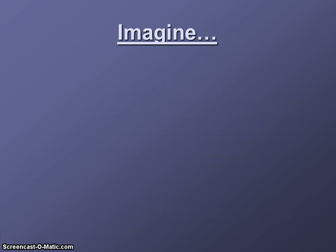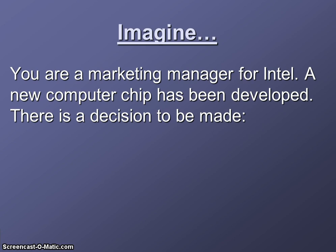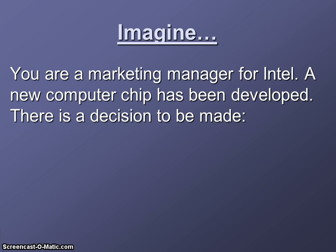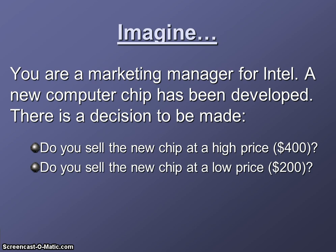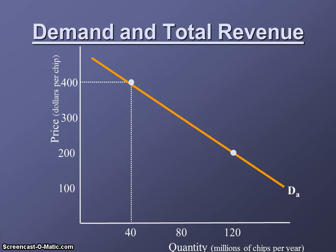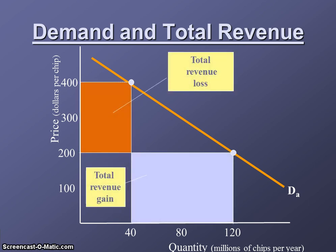Here's an example to get us thinking. Imagine you're a marketing manager for Intel. A new computer chip has been developed and there's a decision to be made: do you sell the new chip at a high price, such as $400, or a low price, such as $200? If we were to sell this chip at $400, according to the demand curve, 40 million chips per year would be sold at $400, and 120 million chips would be sold at $200. So if this company were considering dropping the price from $400 down to $200, according to the total revenue loss and total revenue gain, this seems like a good decision.